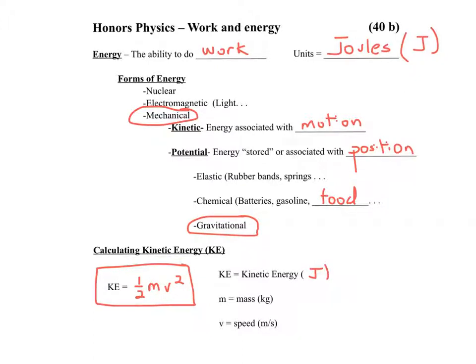And the formula is one-half m, which is the mass of the object in kilograms, times the velocity squared or the speed squared. It's just the magnitude of the velocity. And it is a scalar, it's not a vector, there's no direction associated with kinetic energy.